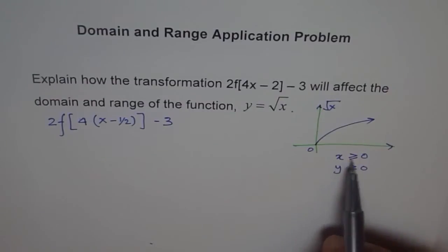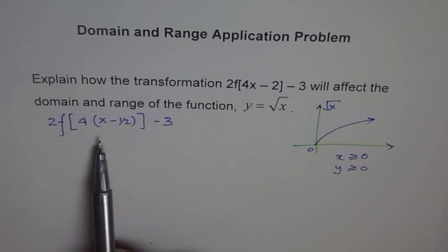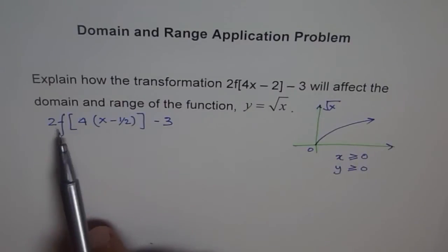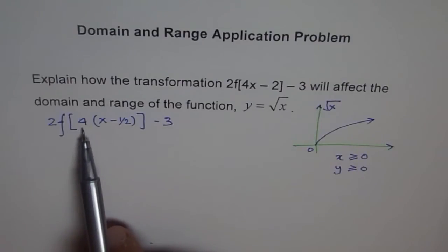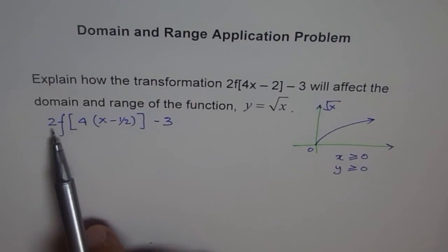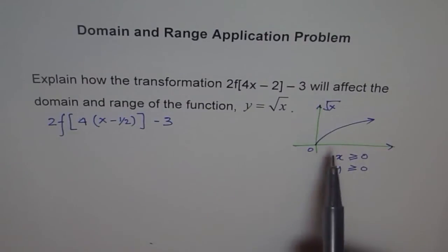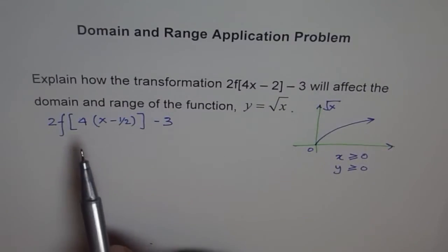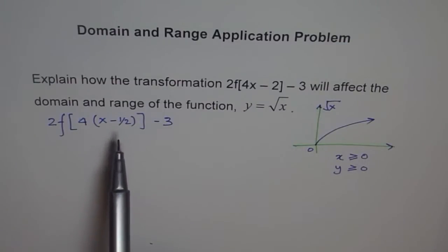Now, if domain and range is this, these vertical stretches and compressions really don't affect our domain range because when you multiply 0 by 2, it becomes 0. If you multiply 4 or 1 over 4 by 0, it remains 0. So what really is affecting your domain range here is these translations.